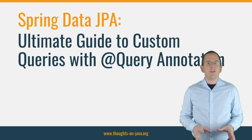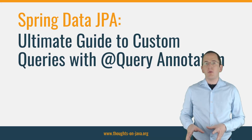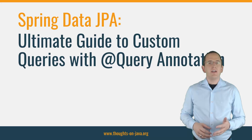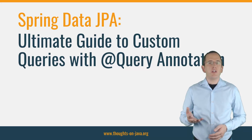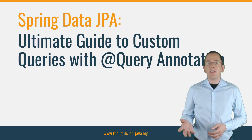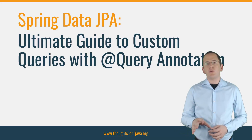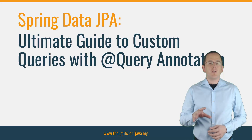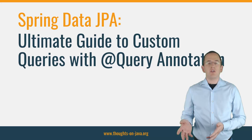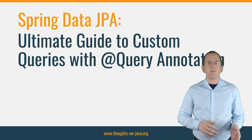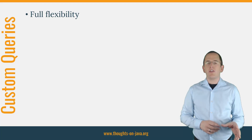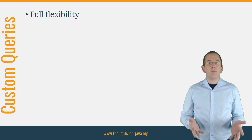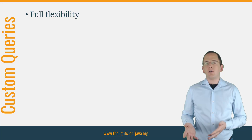Derived queries are very comfortable to use as long as the queries are not too complicated. But as soon as you use more than 2 to 3 query parameters or need to define multiple joins to other entities, you need a more flexible approach. In these situations, you better use Spring Data JPA's @Query annotation to specify a custom JPQL or native SQL query. The @Query annotation gives you full flexibility over the executed statement and your method name doesn't need to follow any conventions.